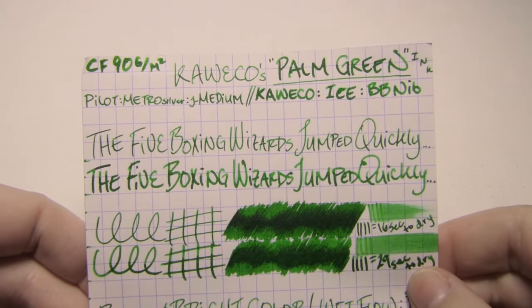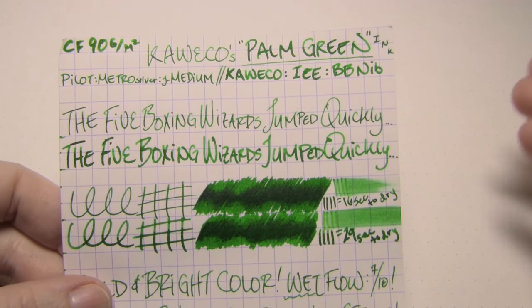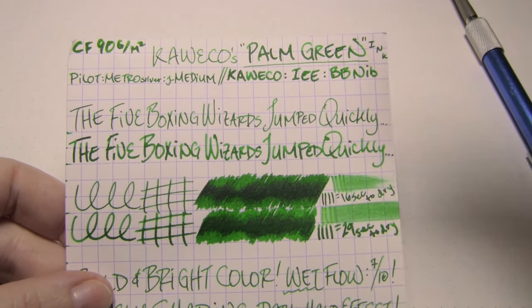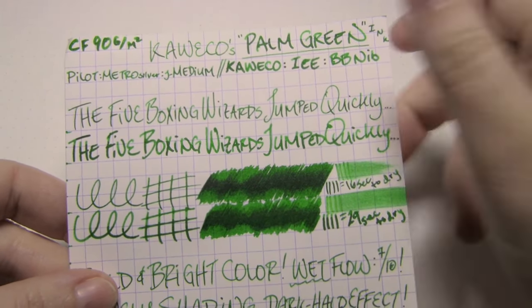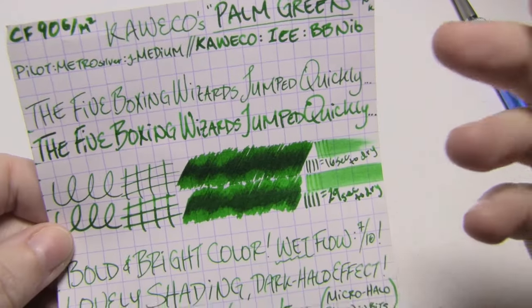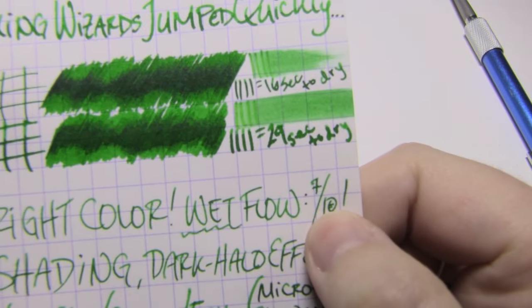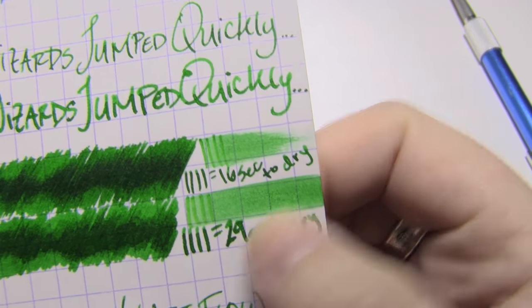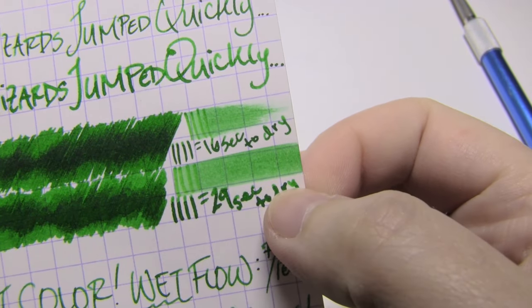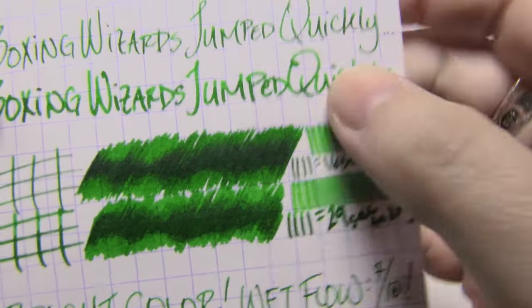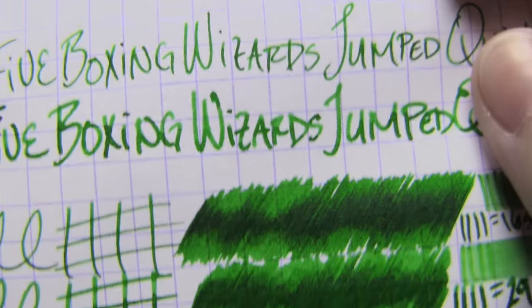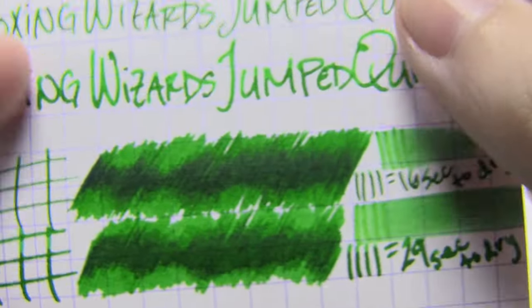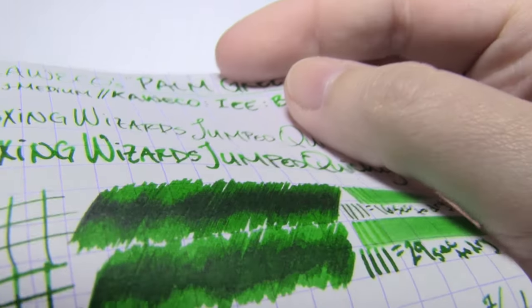Paper test. Top down in density. Clairefontaine, 90 grams per square meter. This is a bright, intense, what I would call true green. It doesn't really lean towards blue. It doesn't really lean towards yellow. When you think of a stereotypical green, this is probably what you're thinking of. It is wet flowing. It's maybe 7 out of 10. And so on that double broad, it went through 4 blocks. That Kweko took 29 seconds to dry. The Japanese medium took 16.